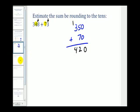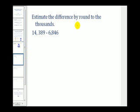Let's take a look at a couple more examples. Here we want to estimate the difference by rounding to the thousands. So this four is in the thousands and so is the six. The digits to the right will tell us to round up or round down. So 14,389, this three tells us to round down, so this would round to 14,000.